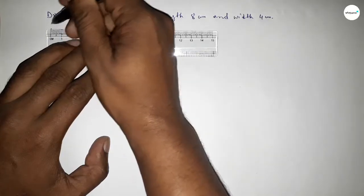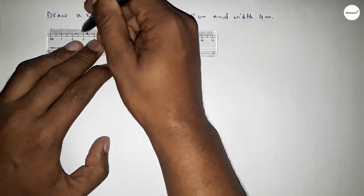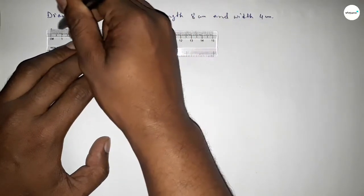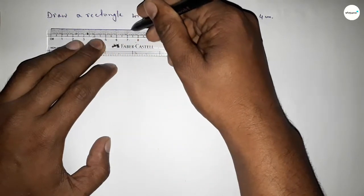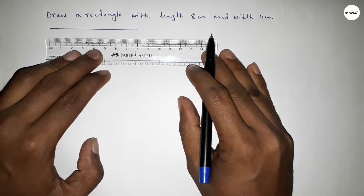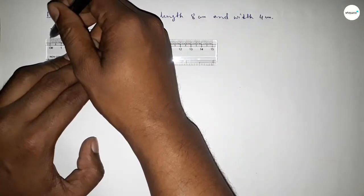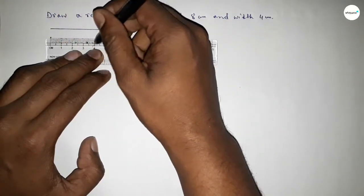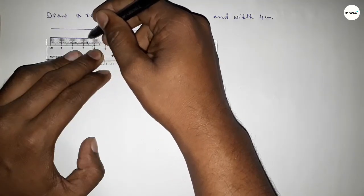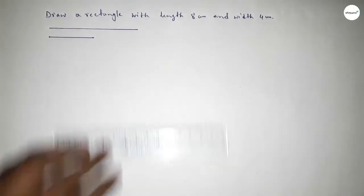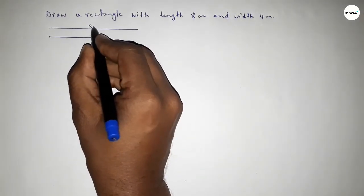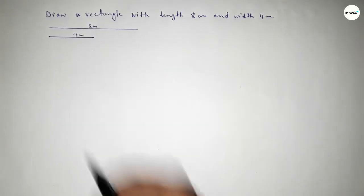First of all, we draw a line of length 8 centimeters — 0, 1, 2, 3, 4, 5, 6, 7, 8. Then drawing another line of length 4 centimeters — 0, 1, 2, 3, 4. So this one is 8 centimeters length and this one is 4 centimeters.